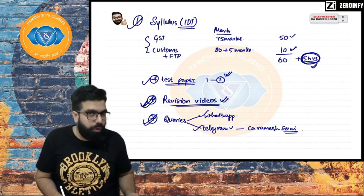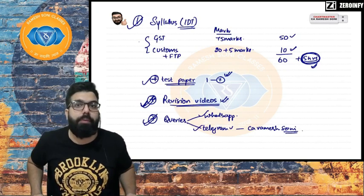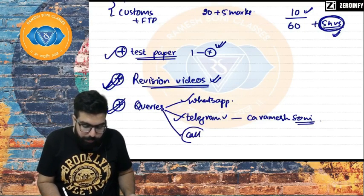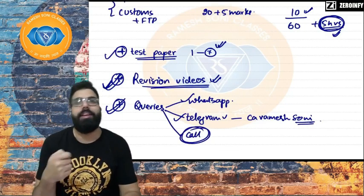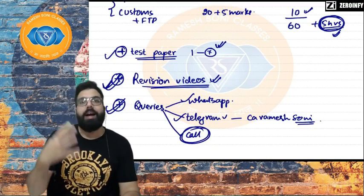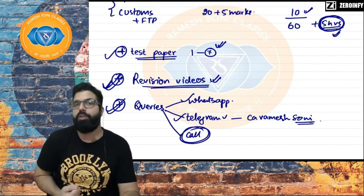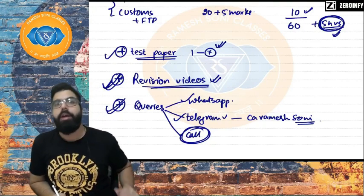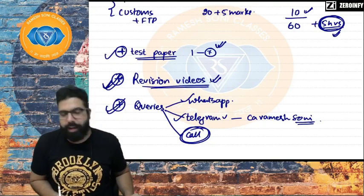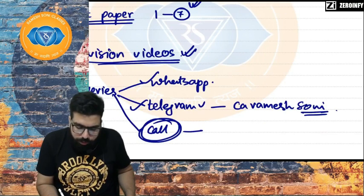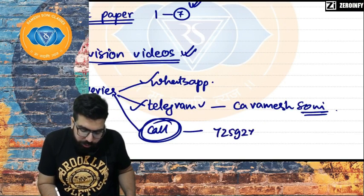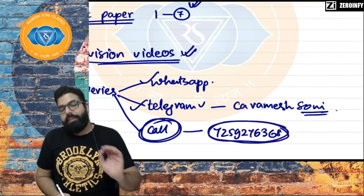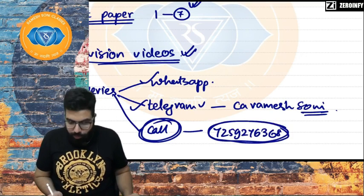If you want to discuss something over a call, drop me a message saying you have a few queries and want to discuss. I'll tell you a suitable time to call. My number is 7259276368 — save it and reach out whenever needed.